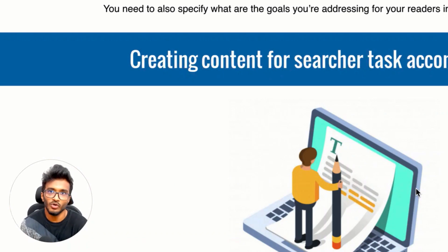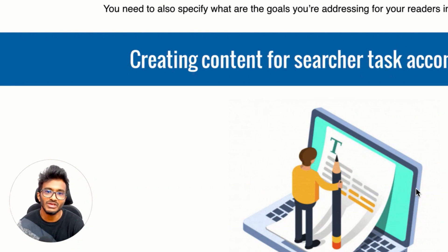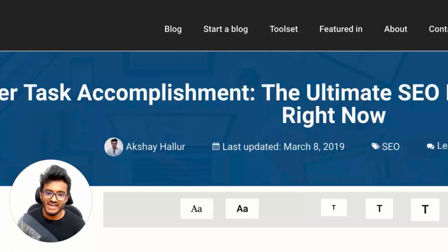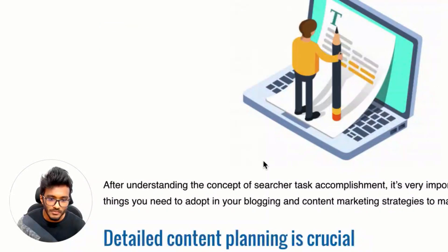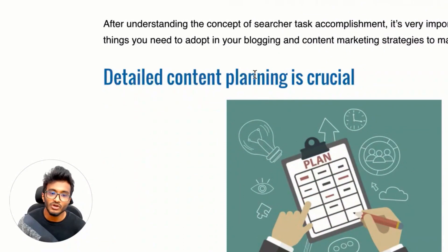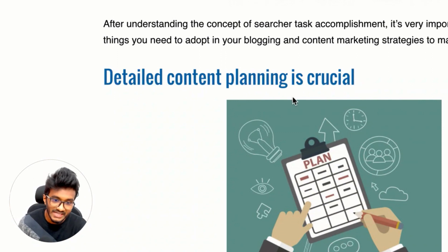To implement goal-oriented content on your blog, look at what content marketers do: they include plenty of screenshots and actionable tips people can take away right now, so readers won't need to look elsewhere. That's what I'm doing — answering every question about searcher task accomplishment in this guide. Detailed content planning is crucial. You can't just open Google Docs and start typing; you need a content plan, content outline, and the questions you need to answer in your blog post.